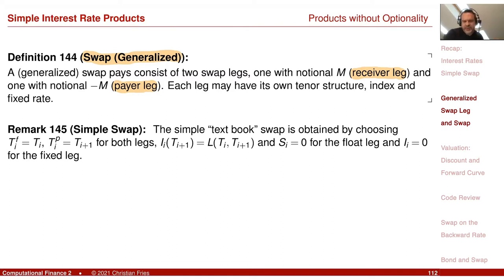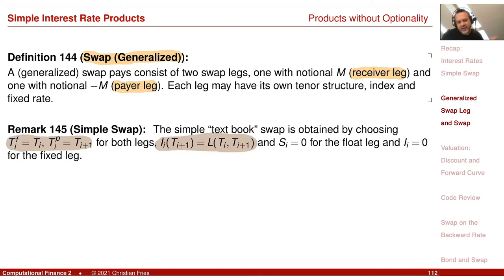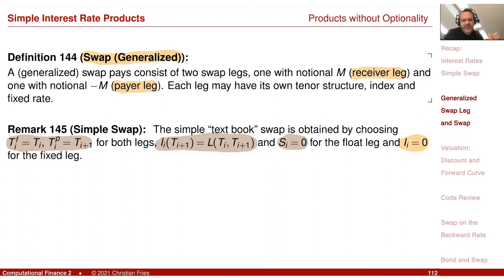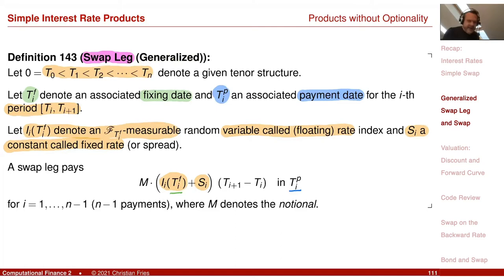The simple textbook swap is obtained by choosing a special structure for fixing date and payment date — fixing at the beginning of the period, payment at the end — a special index: the forward rate for the float leg, spread zero; and for the fixed leg the index is zero and the spread is just some constant. We can construct our textbook swap from this generalization, and we can also build other swaps.